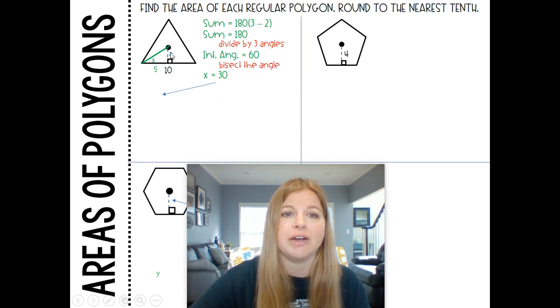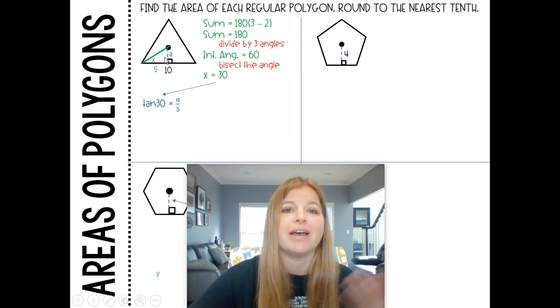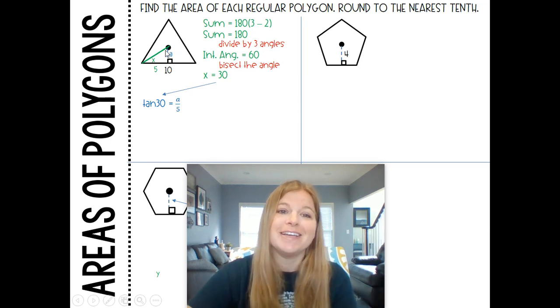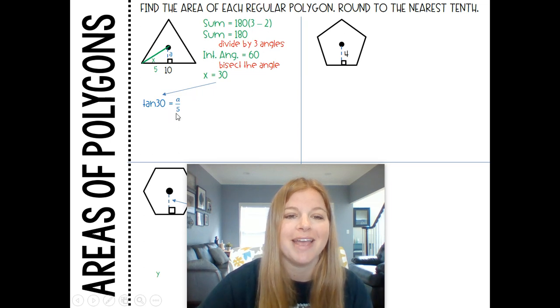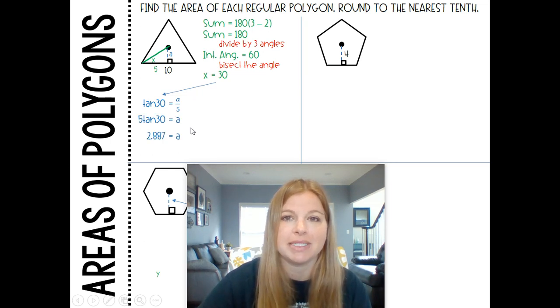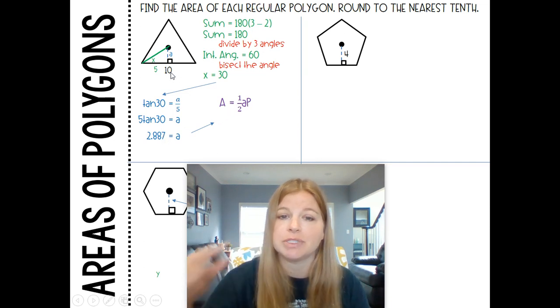I need to figure out a. I know if the entire length is 10 here, then this little segment is 5. So tan of 30 equals a over 5, opposite over adjacent. I multiply both sides by 5, and I get my decimal 2.887. Now I can use my area formula: area equals one half, my apothem, and now my perimeter. If I see a side is 10, 10 times 3 is 30, and I end up getting 43.3 units squared.